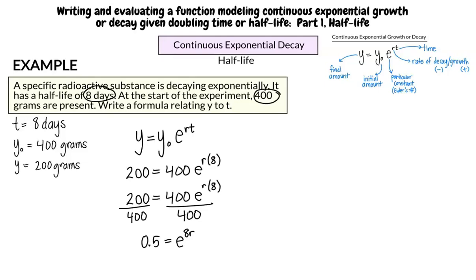200 equals 400 times e raised to the r times 8. I divide both sides by 400 and write r times 8 as 8r. Now I have 0.5 equals e raised to the 8r. I'm not really sure where to go from here.